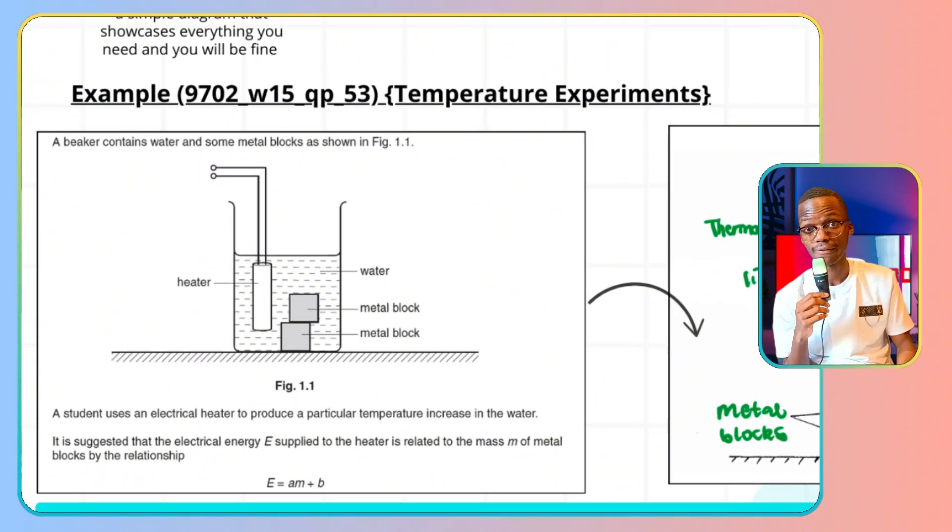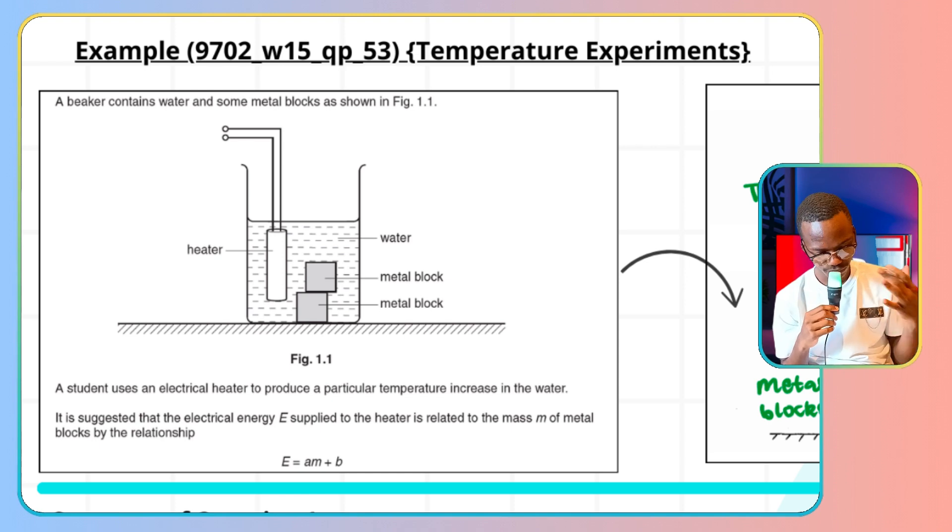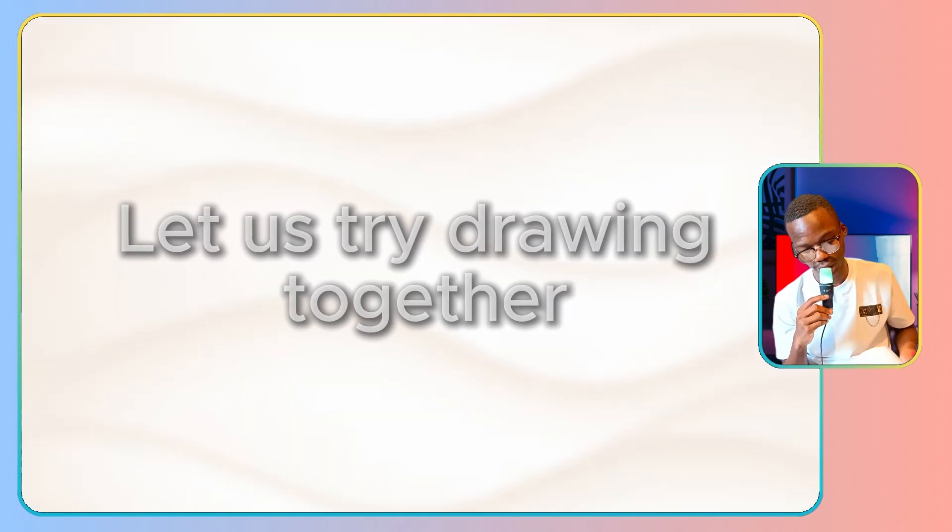Winter 2015, question paper 5.3. A simple temperature experiment. You're given a beaker containing water and some metal bricks that are present as well. The student is using an electrical heater to produce a particular temperature increase. It is suggested that the electrical energy supplied to the heater is related to the mass M of the metal blocks by the above relationship. So I'm asking myself, I'm seeing a heater. How can that heater get power? How can I be able to get electrical energy to power that particular heater? So what I'm going to do, always when you have diagrams, is imitate the original shape or the original diagram that you have initially.